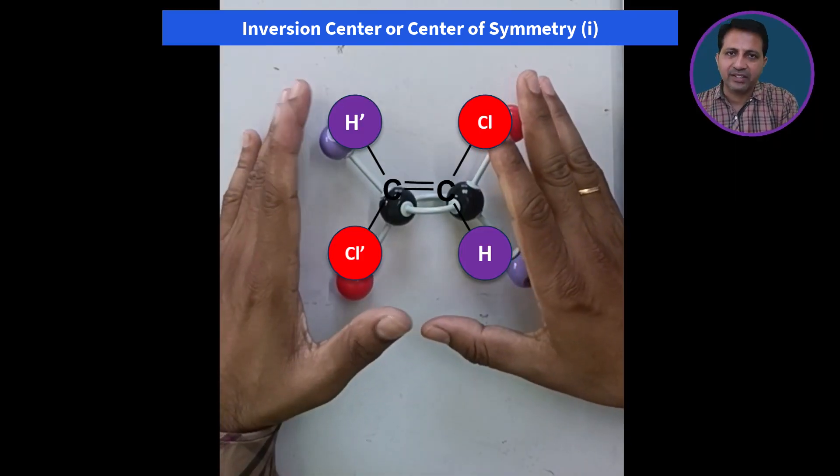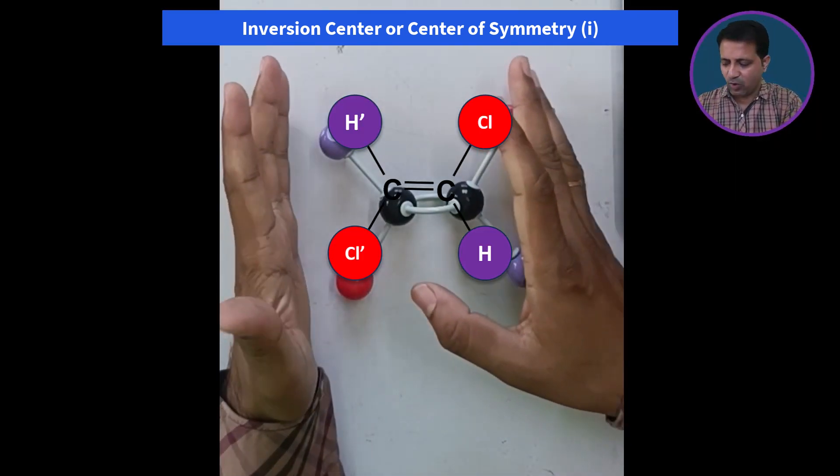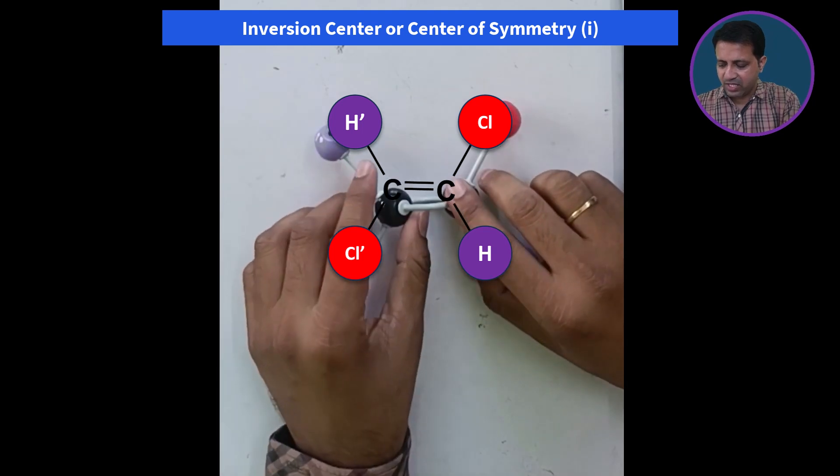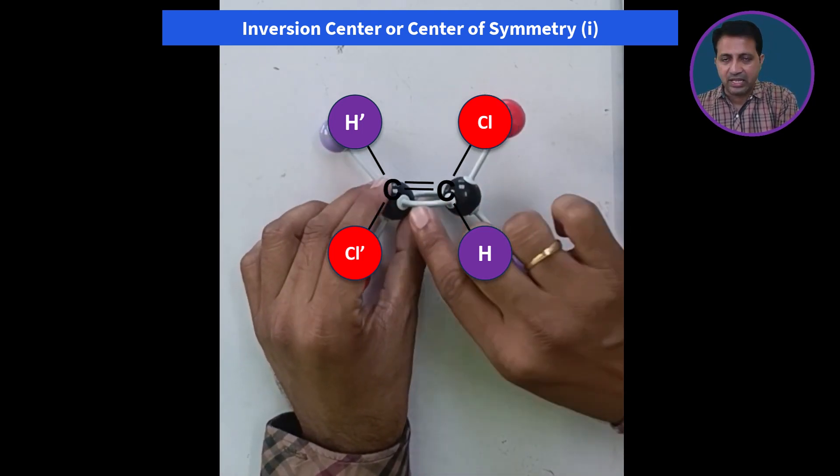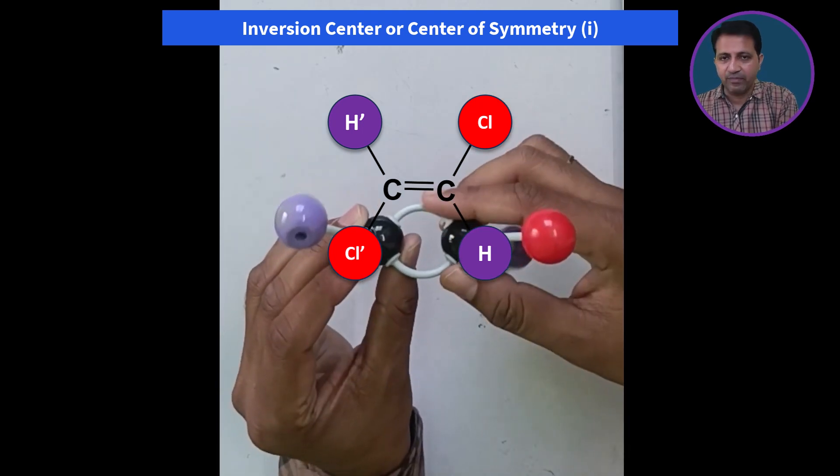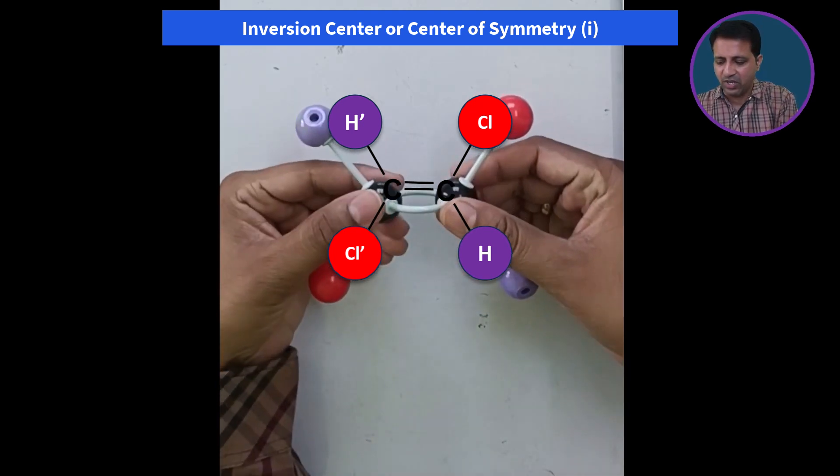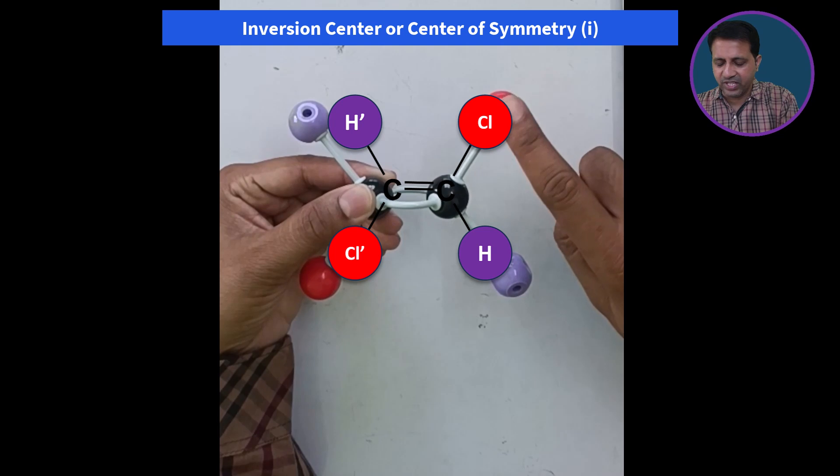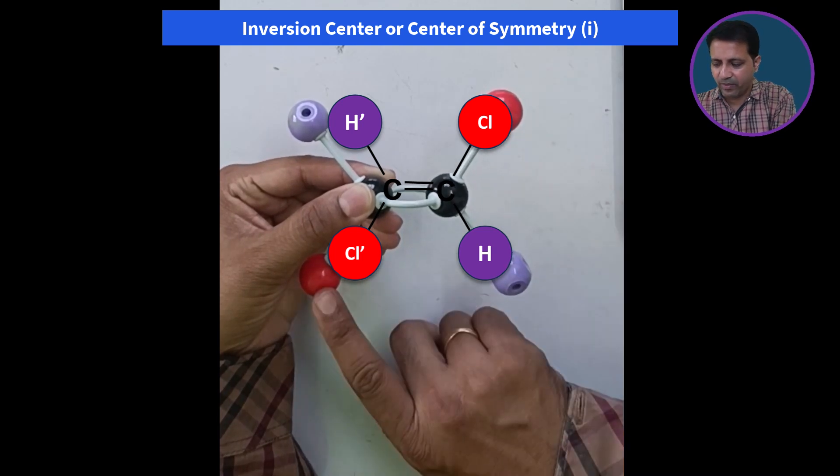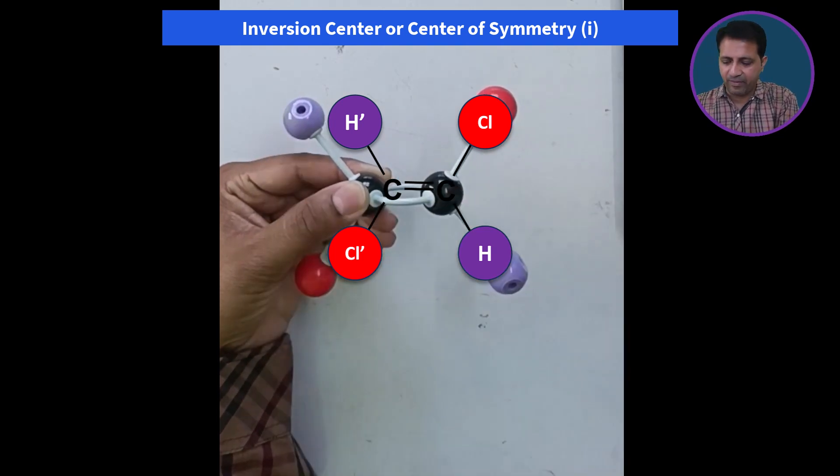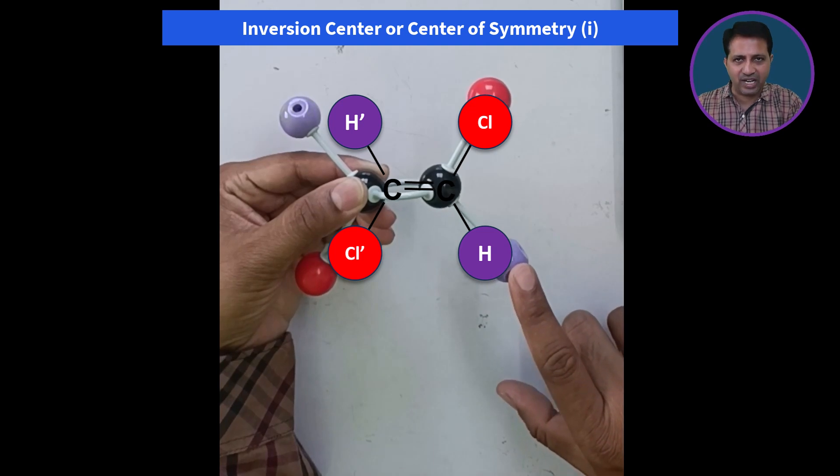Let's understand this concept using this model. As you see, these middle two are carbon atoms. Here is the double bond between these two carbon atoms. In this example, this one is the chlorine atom, chlorine prime, hydrogen prime, and this one is the hydrogen atom.